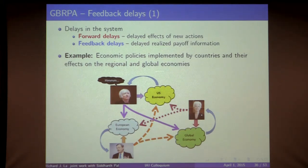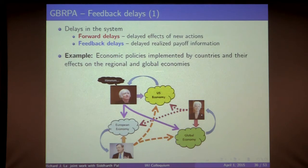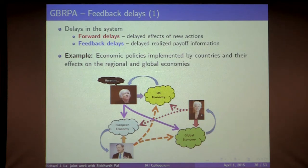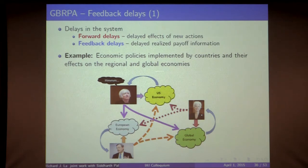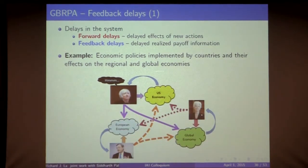Regarding Nash Equilibrium as the desired outcome: in engineering applications there are actually two parts. First is utility design — you assign payoff functions to agents so that the Nash Equilibrium has certain desirable properties, making it the desired operating point. Second is algorithm design so agents can converge there. The Nash Equilibrium is the desired operating point precisely because you designed the utility that way.